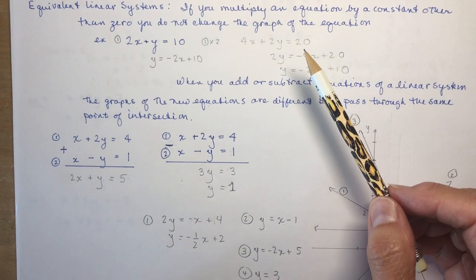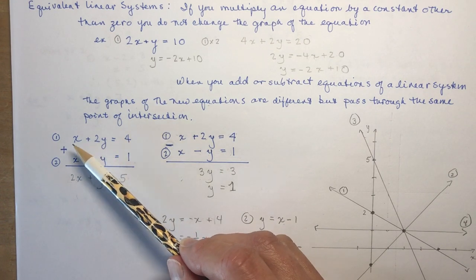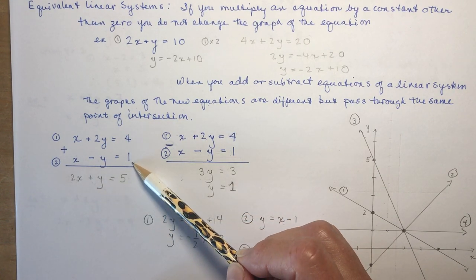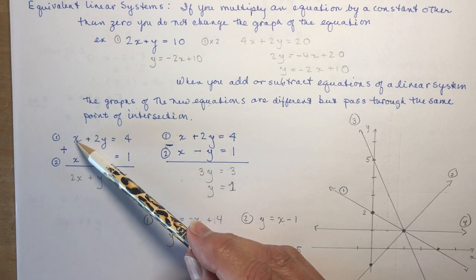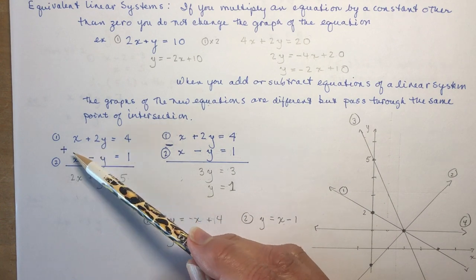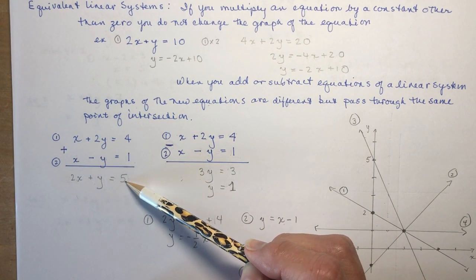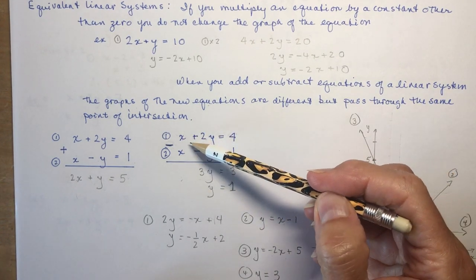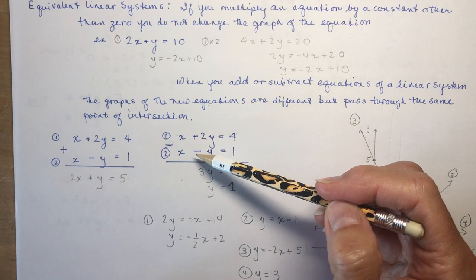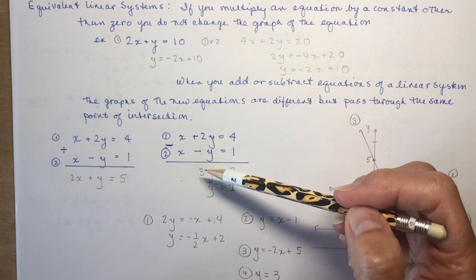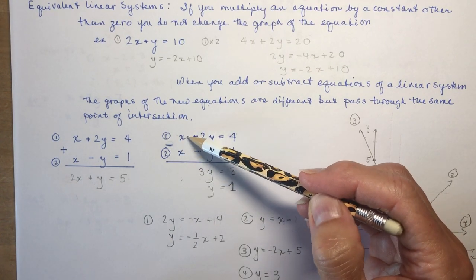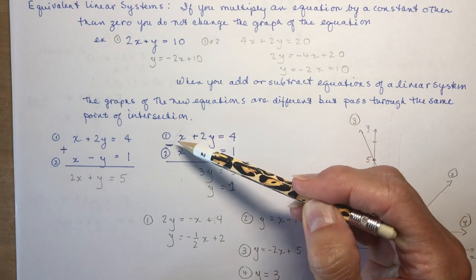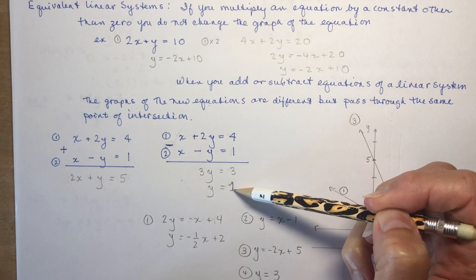For example, with x + 2y = 4 and x − y = 1: if I add the equations together, x + x = 2x, 2y + (−y) = y, and 4 + 1 = 5. If I subtract them, the x's are eliminated — gone. I only have one variable: 2y − (−y) = 3y and 4 − 1 = 3, so y = 1.